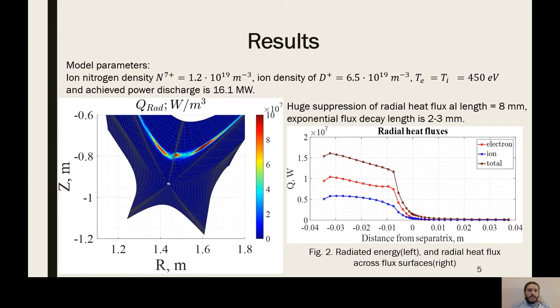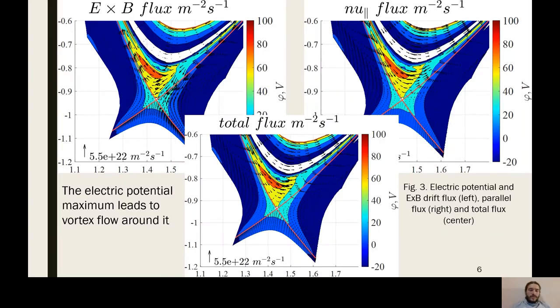Here you can see an example of the modeling with radiative x-point region. At the top of the slide you can see the modeling params and in the left picture you can see the radiated energy and you can see the radiation belt above x-point at the separatrix. Because of that we have the significant drop of radial energy fluxes that you can see at the right plot. Completely no energy comes through the separatrix and the length of decay of these radiative heat fluxes is about 8 millimeters. Here you can see the particle fluxes and electrical potential.